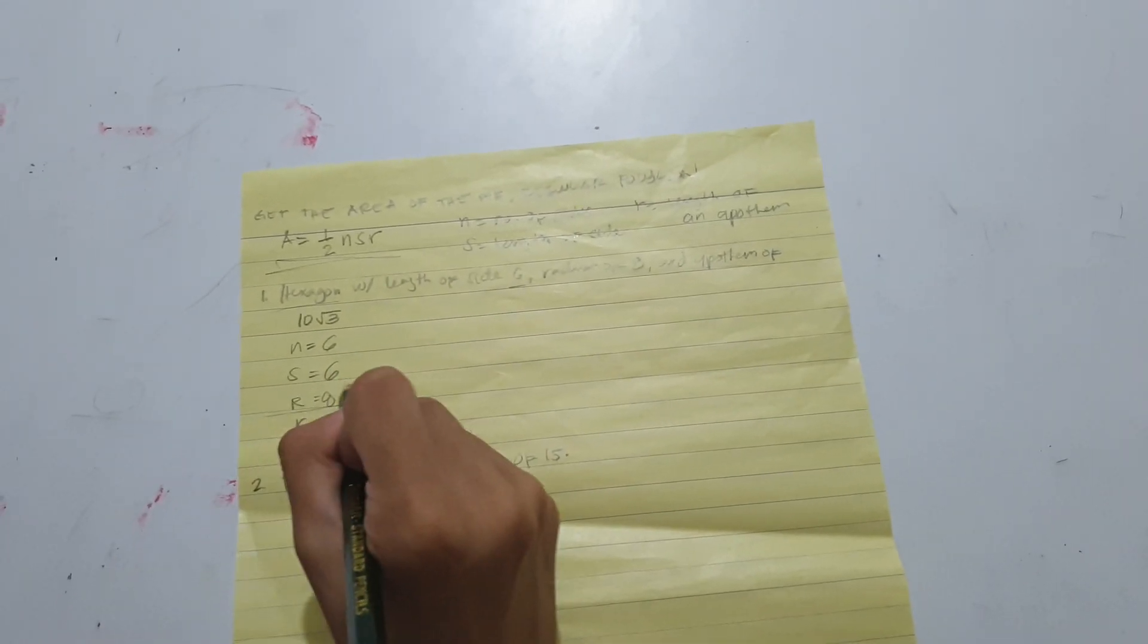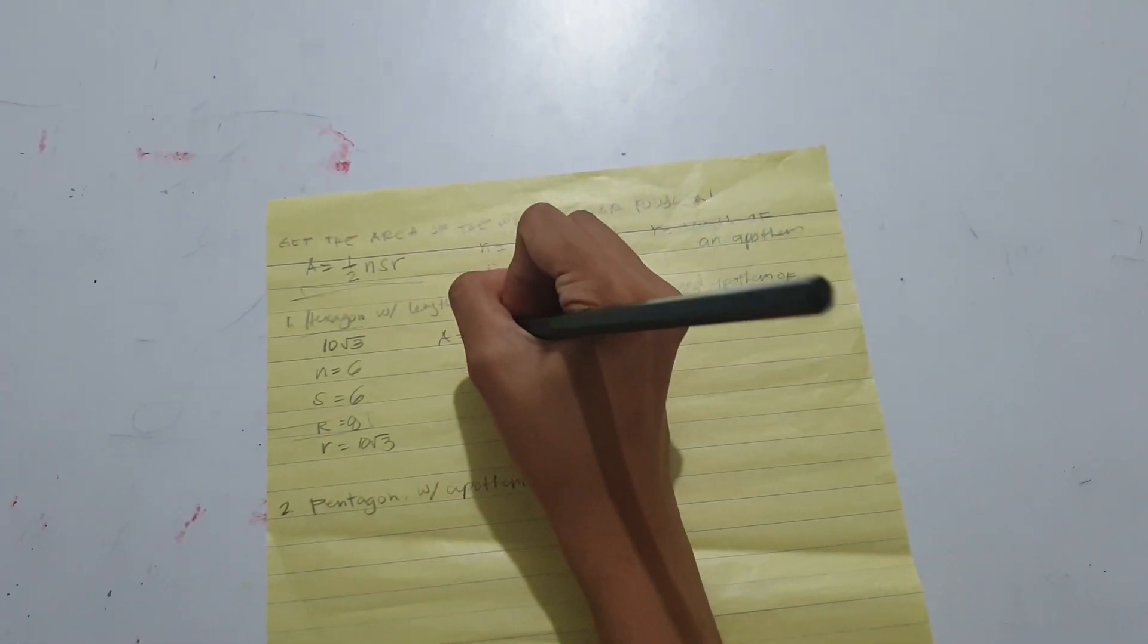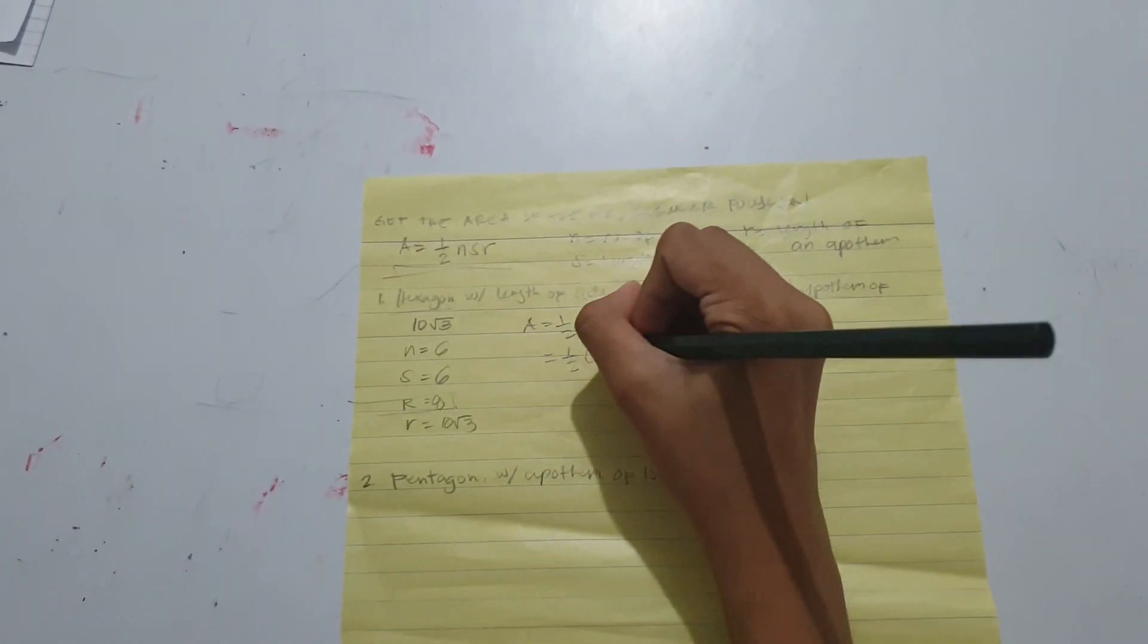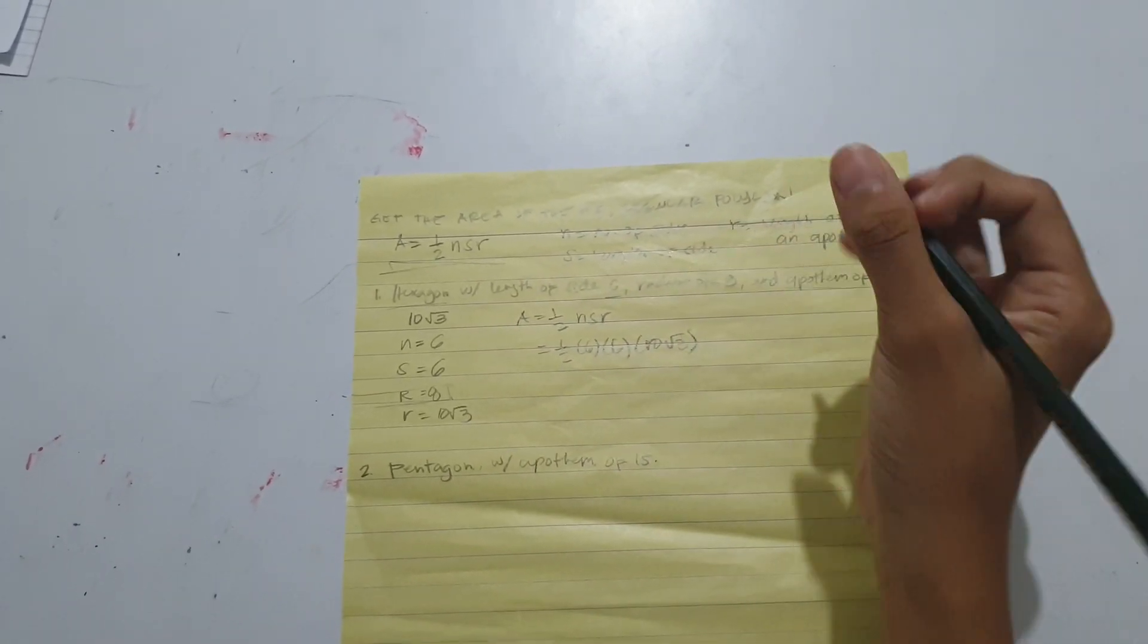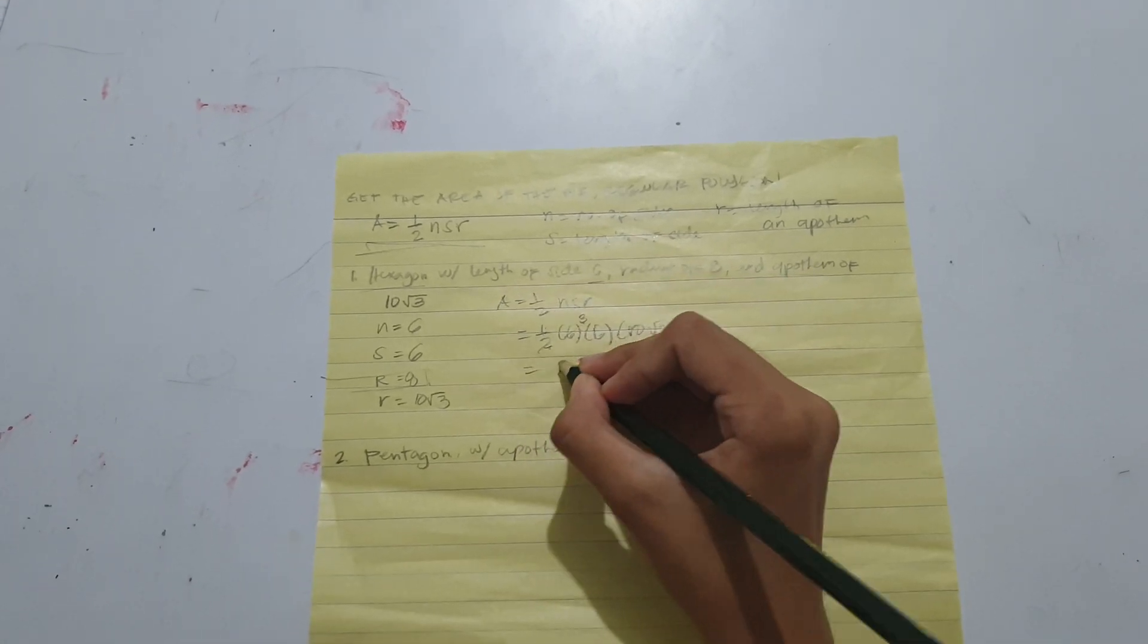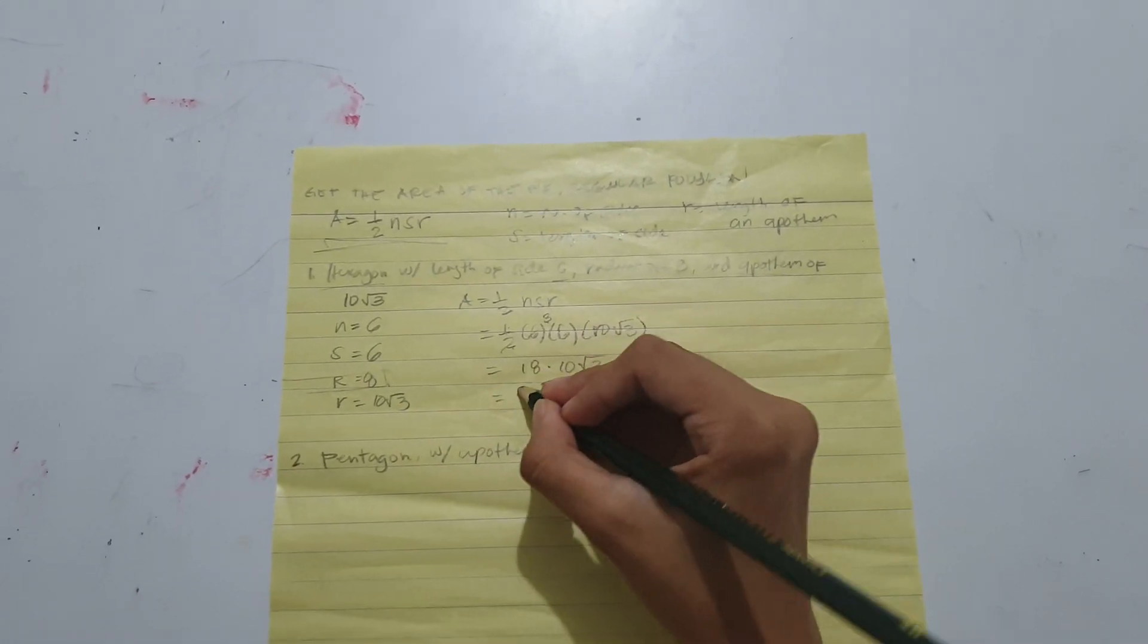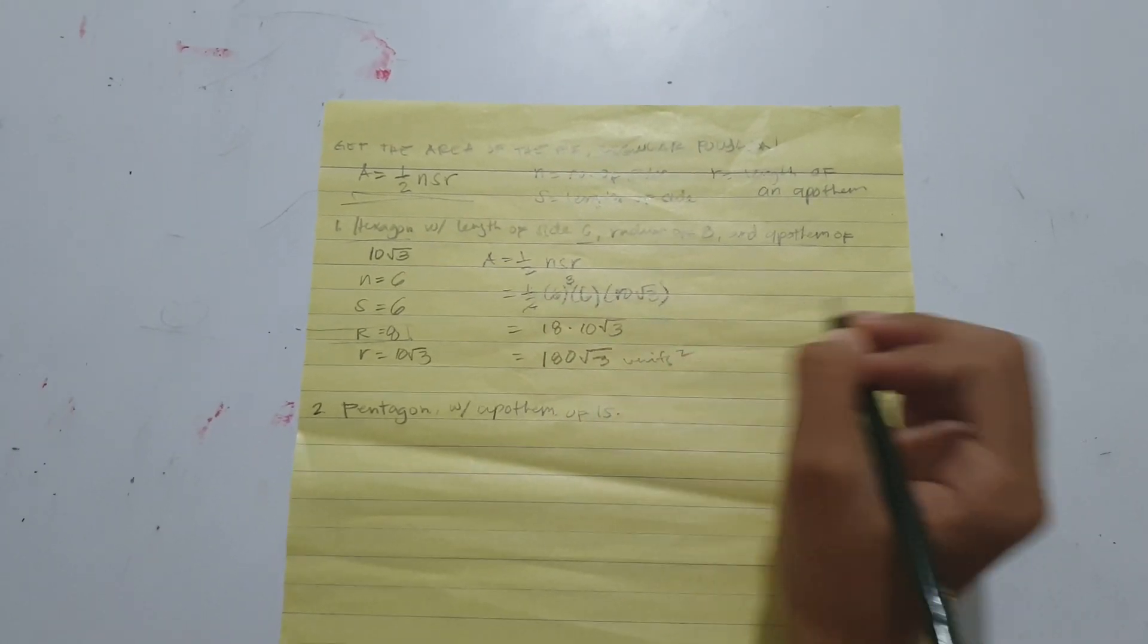Radius would be excluded since it is not needed in our formula. For substitution: A equals one-half N S R. One-half times six times six times ten square root of three. One-half times six is three. Three times six is eighteen times ten square root of three. Final answer would be 180 square root of three units squared.